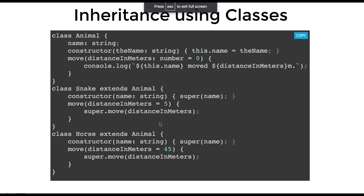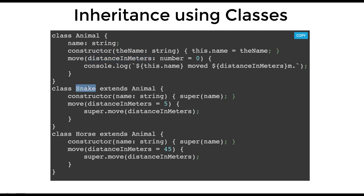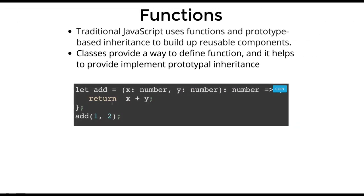Here is an example of an ES6 class where the Animal class is extended by Snake and Horse. You can see type safety applied everywhere: name is of type string in the constructor, and in the move method the distance parameter is of type number. Snake and Horse both extend Animal. Things are pretty much the same as ES6 classes — we extend one class into another — but now we are adding type safety on top of it.